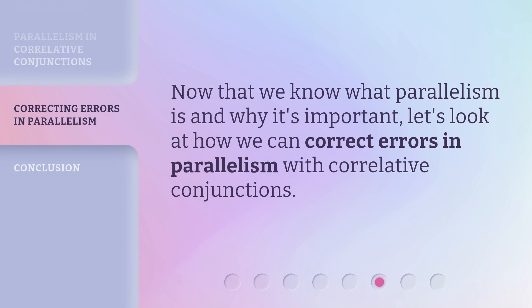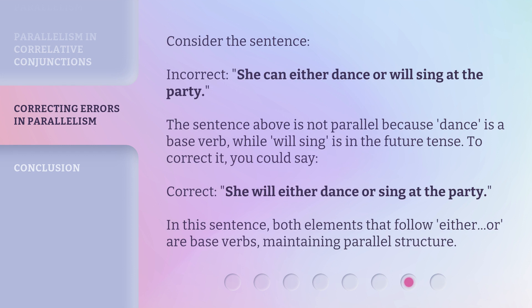Now that we know what parallelism is and why it's important, let's look at how we can correct errors in parallelism with correlative conjunctions. Consider the sentence — Incorrect: She can either dance or will sing at the party. The sentence above is not parallel because 'dance' is a base verb, while 'will sing' is in the future tense. To correct it, you could say — Correct: She will either dance or sing at the party. In this sentence, both elements that follow 'either' are base verbs, maintaining parallel structure.